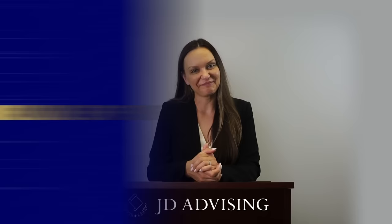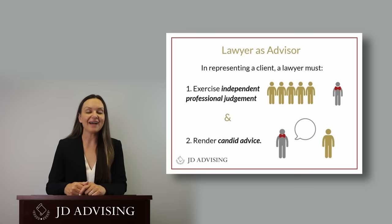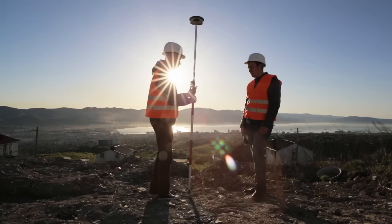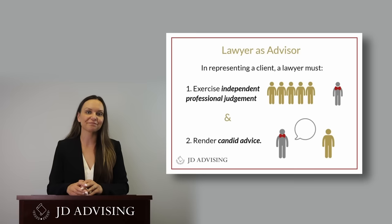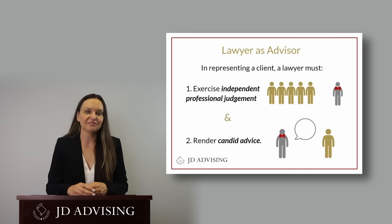Turning to the eighth subsection, different roles of the lawyer, which makes up 4 to 10% of your total exam. Lawyers can act as advisors — when doing so, they're supposed to render candid advice to their clients, even if it's something the client doesn't want to hear. When lawyers work as an evaluator, they can provide evaluations of a matter affecting their client for the use of someone other than the client, if they reasonably believe making this evaluation is compatible with the lawyer's relationship with the client. If the lawyer knows the information will affect the client's interests in a material and adverse way, they should not provide the evaluation unless the client gives informed consent.